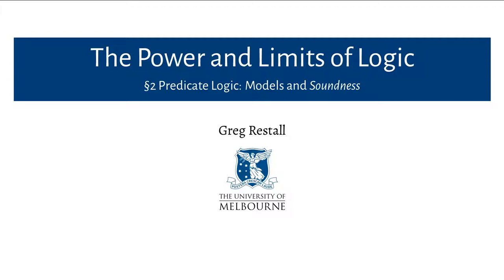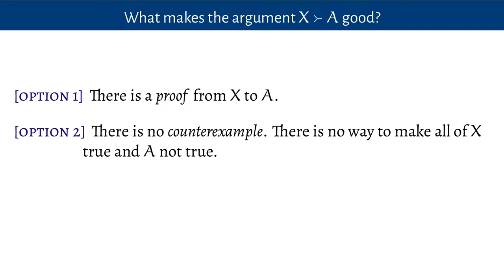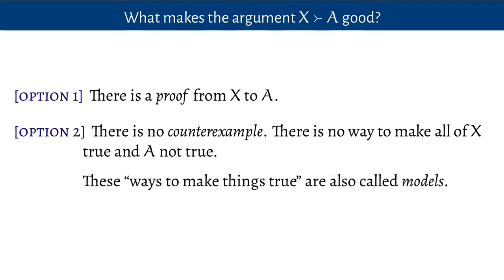In the last video I introduced proofs for predicate logic. In this video we're going to look at models, which are another way of analyzing arguments. There are two great traditions in logic when it comes to asking what makes the argument from premises to conclusion good. We've already seen one answer: the first option is to say that there is a proof which gets you from those premises to the conclusion. But there's another option, which says that an argument is good when there's no counterexample — when there's no way to make all of the premises true and the conclusion not be true too. We're going to look at one way of making this second option precise, introducing a simple notion called a model.